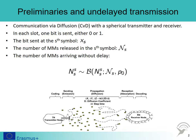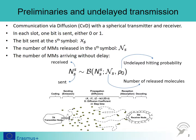Many molecules are released by the transmitter node and absorbed by the receiver node in the same symbol. This qualifies as arriving without delay. We denote the number of undelayed molecules as N sub SS — they are sent at symbol S and received at symbol S. N sub SS follows a binomial distribution with trial and success parameters calligraphic N sub S and P sub 0, where 0 indicates zero delay, i.e., the undelayed hitting probability.